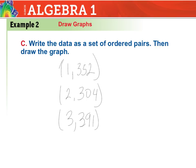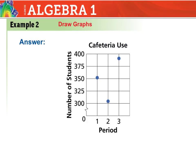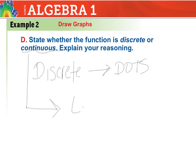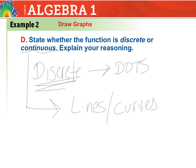There's my data as ordered pairs. It also wants me to draw a graph — we see periods 1, 2, and 3 with number of students. State whether the function is discrete or continuous. A discrete function is made up of dots; a continuous function is made up of lines or curves. This one, because it only has three dots that are not connected, is a discrete graph.